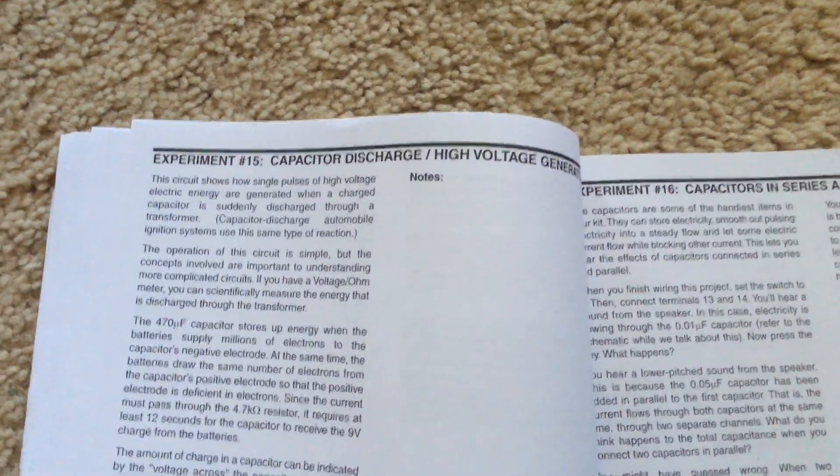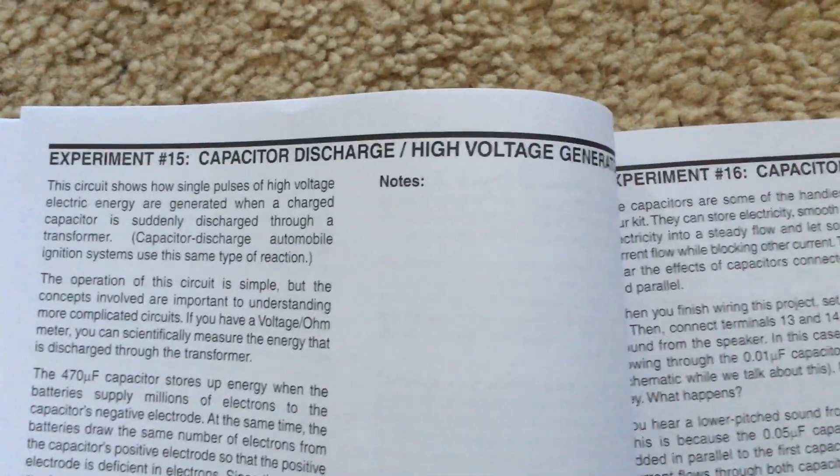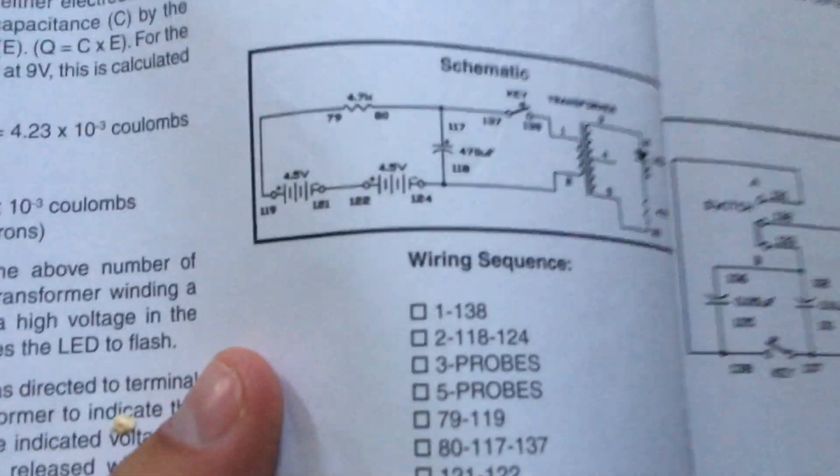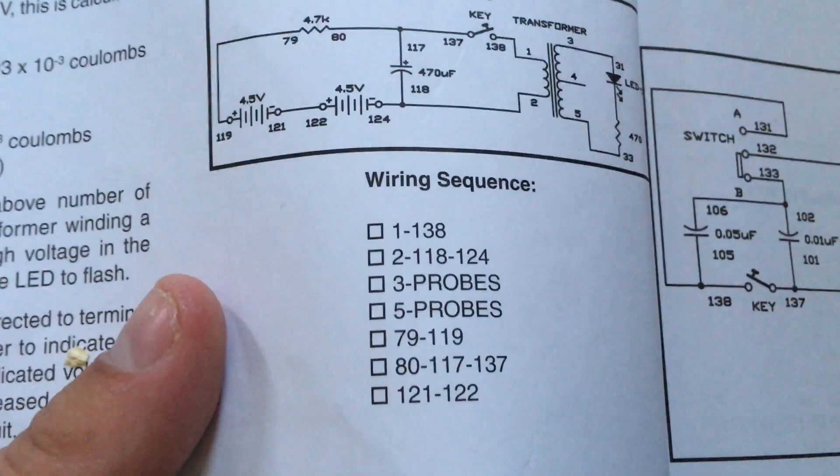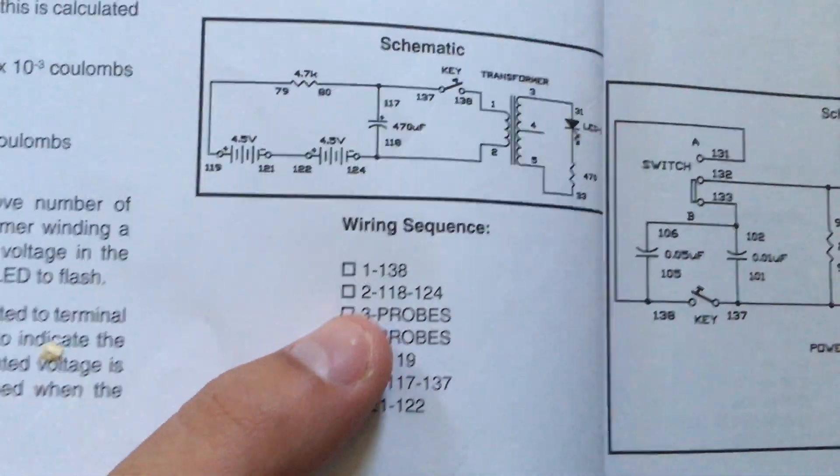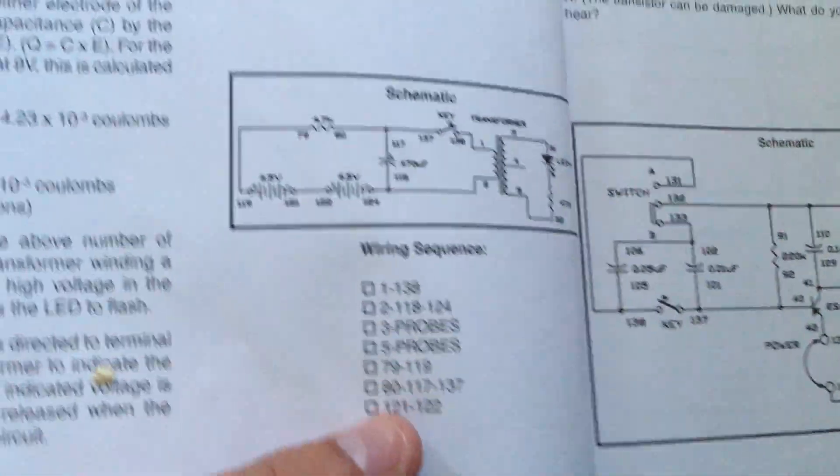Experiment 15 is capacitor discharge and high voltage generator. I can only explain the principle of this project because for some reason when I tried wiring it up, I don't understand what probes means when it says to connect wires 3 and 5 to probes.